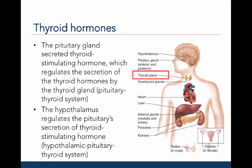The pituitary gland, in addition to secreting growth hormone, also secretes thyroid-stimulating hormone. This hormone regulates secretion of thyroid hormone from the thyroid gland — a system called the pituitary thyroid system. The hypothalamus regulates pituitary secretion of thyroid-stimulating hormone, forming what is called the hypothalamic pituitary thyroid system, or the nervous system thyroid system.